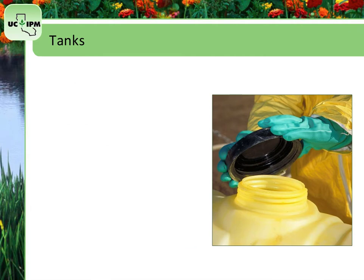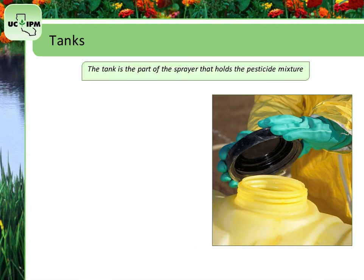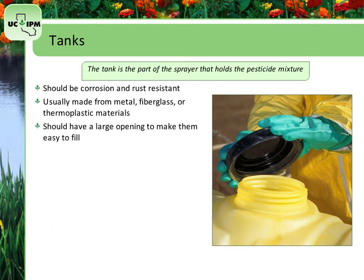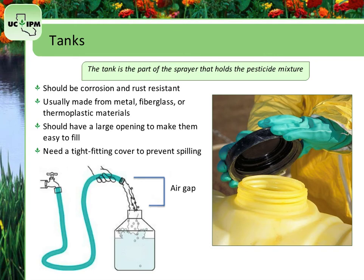The tank is the part of the sprayer that holds the pesticide mixture. It should be corrosion and rust resistant to protect it from reacting with corrosive pesticides. Tanks are usually made from metal, fiberglass, or thermoplastic materials such as polyethylene and polypropylene. Tanks should have a large opening to make them easy to fill and clean, and a tight-fitting cover to prevent spilling. When filling, leave an air gap to prevent contaminated water from siphoning back into the fill hose.